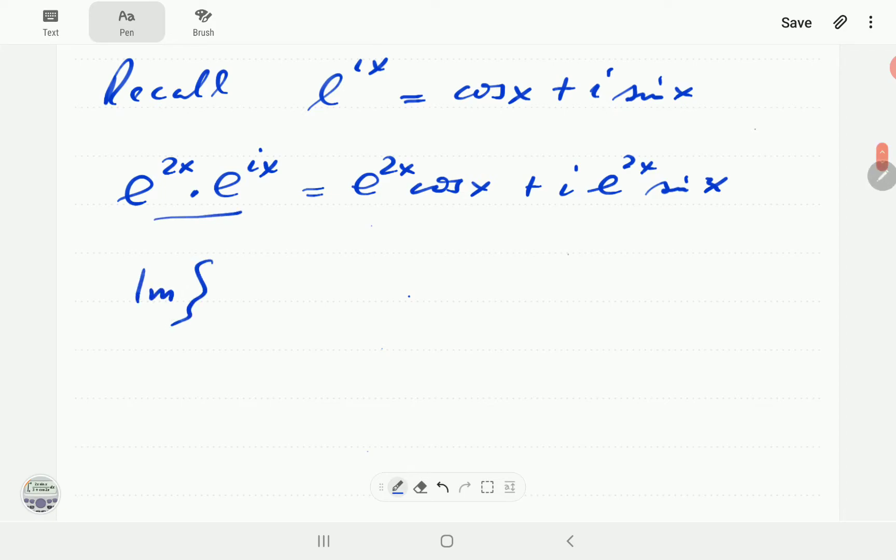the imaginary part of this is going to be e to the 2x. So if we factor out there, this left-hand side we can write as E to the power 2 plus ix.